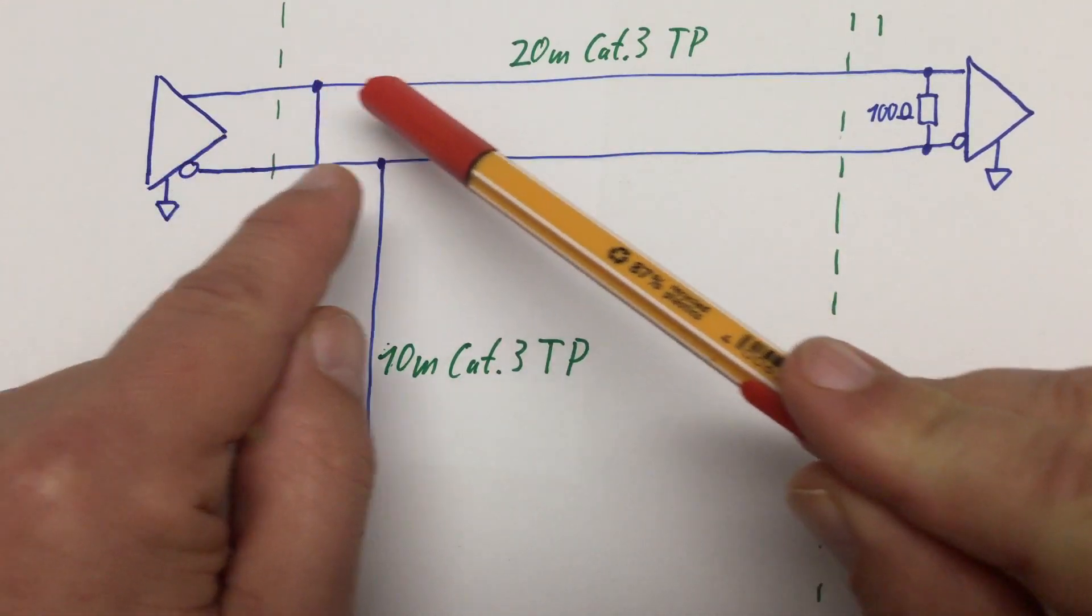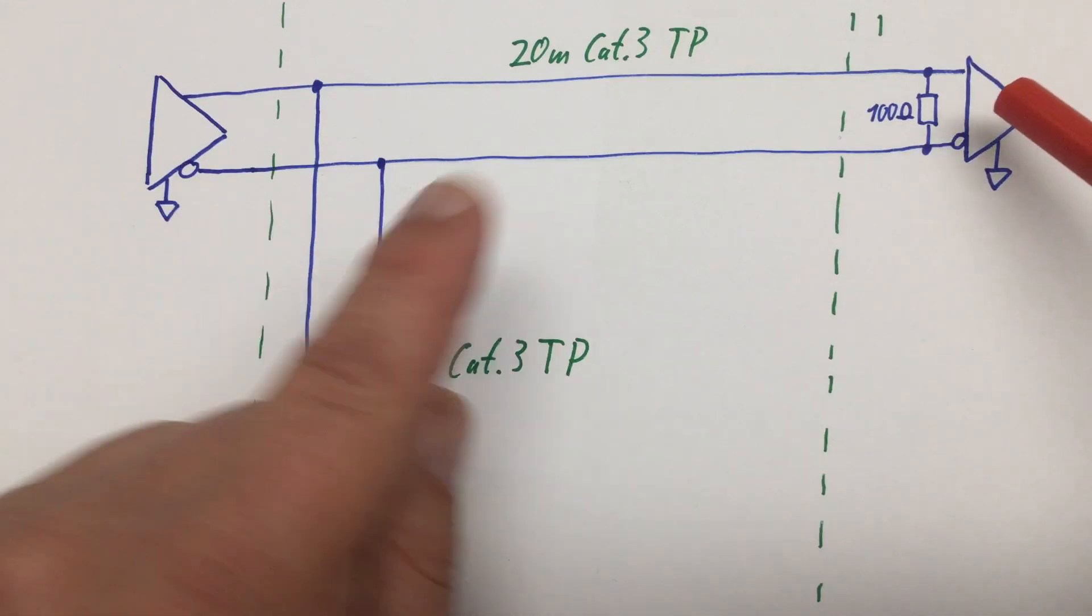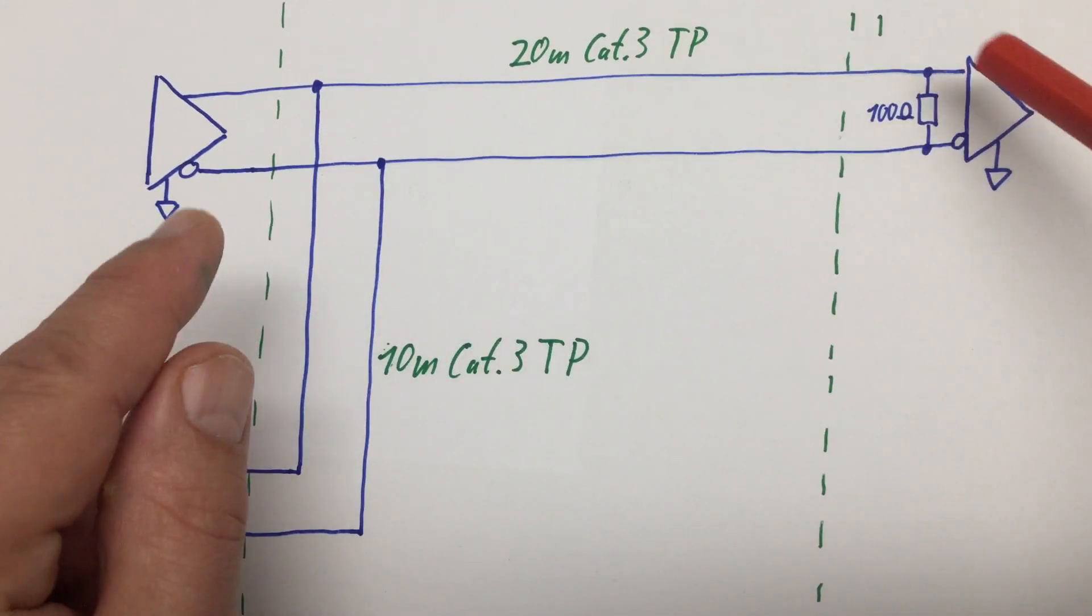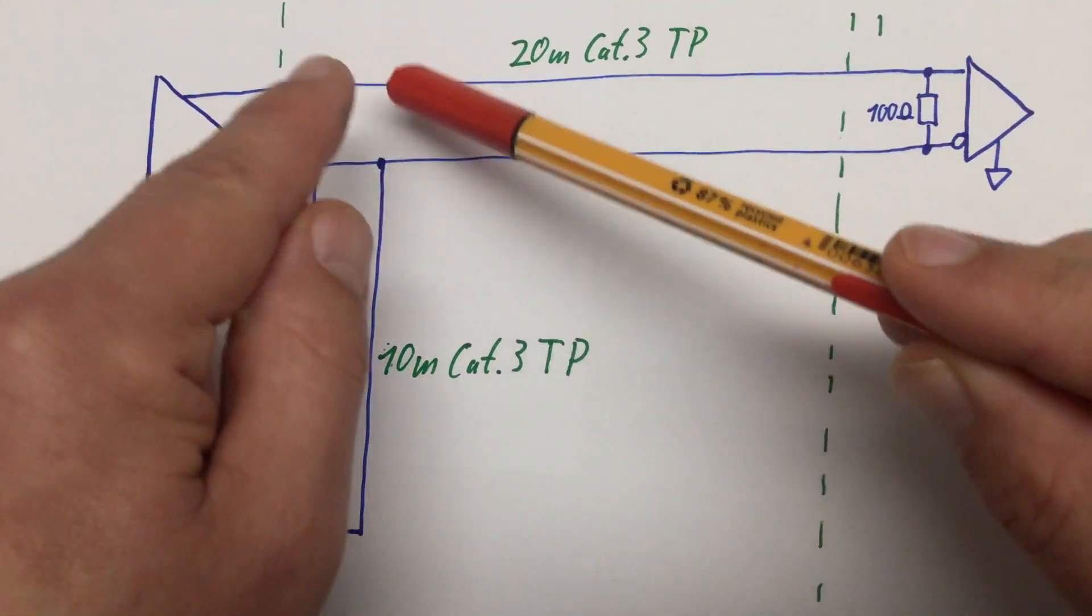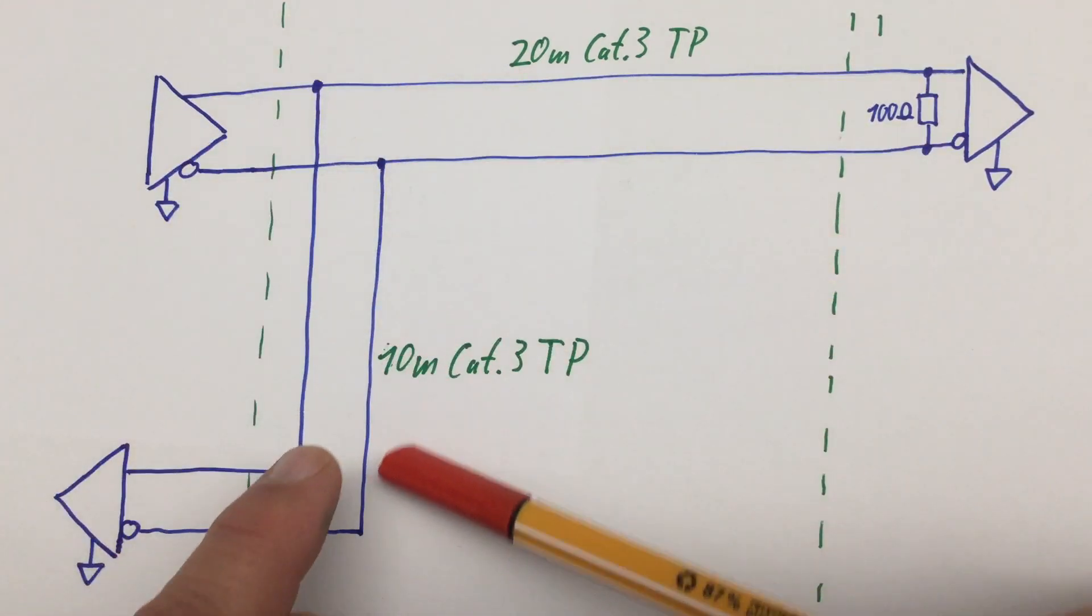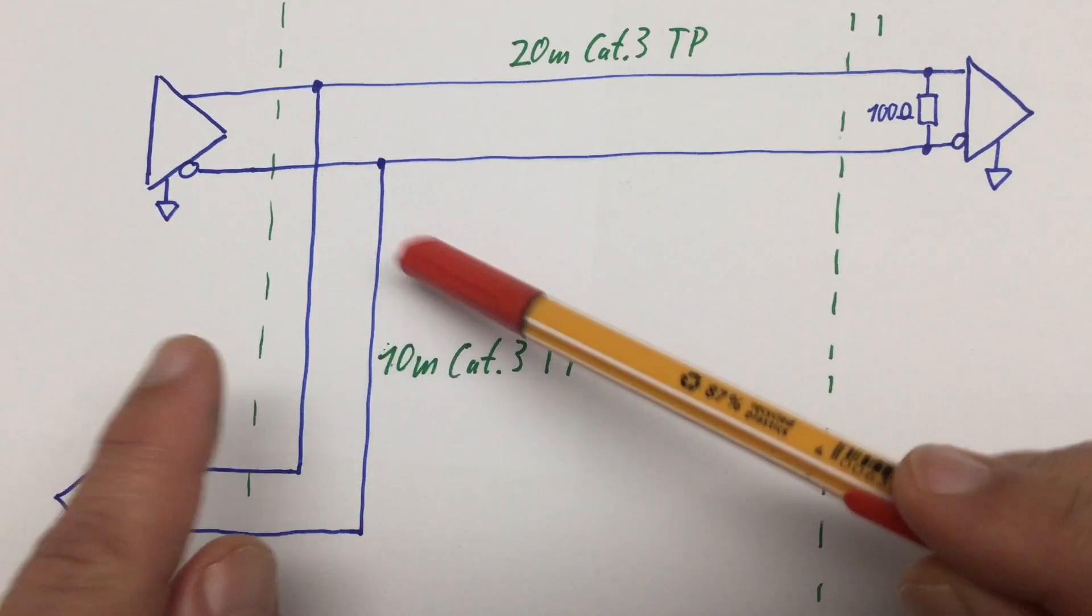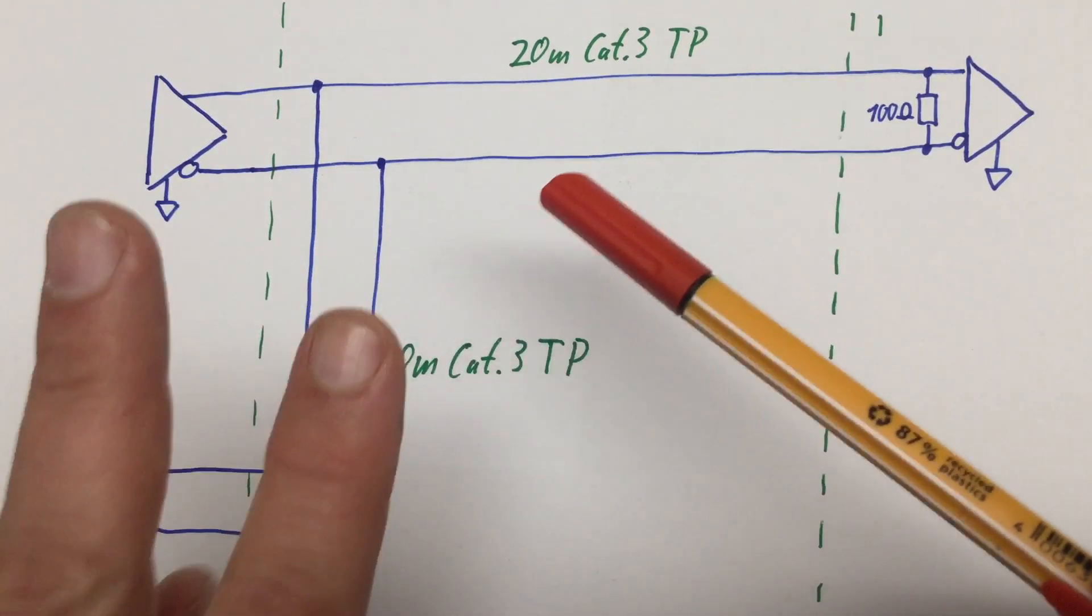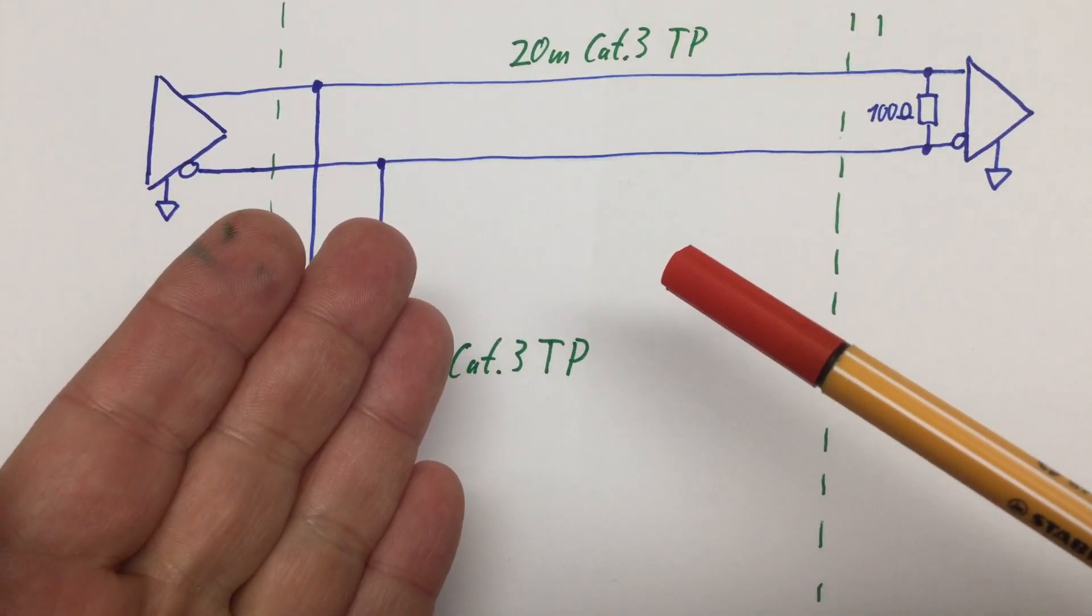So, the topology looks now something like this. From our transmitter, we have 20 meters of CAT3 cable going to our right-hand side first receiver, where I terminated the line with a 100 ohm resistor. And directly from the transmitter, we have 10 meters of another CAT3 twisted pair cable going to our left-hand side second receiver. Now, let's have a look at the oscilloscope.